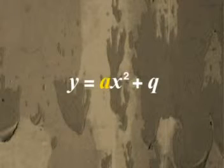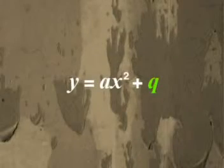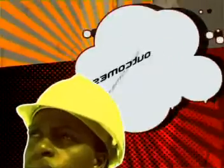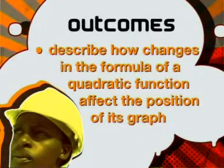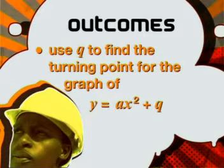Until now, we have only looked at the effect of a in the formula y equals ax squared plus q — we kept q equal to 0. Let's now look at what happens to the parent graph if we change the value of q. By the end of this lesson, you should be able to describe how changes in the formula of a quadratic function affect the position of its graph, and use q to find the turning point for the graph of y equals ax squared plus q.